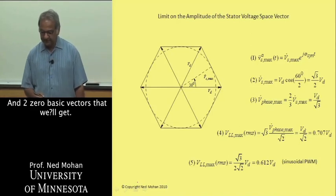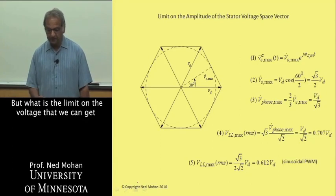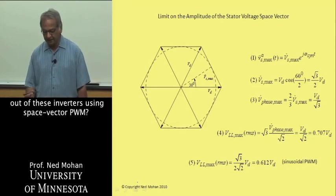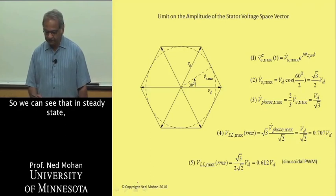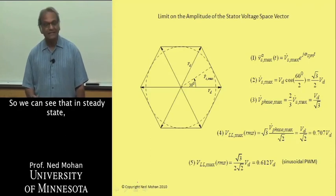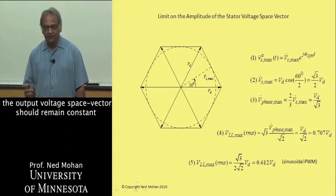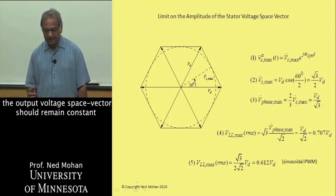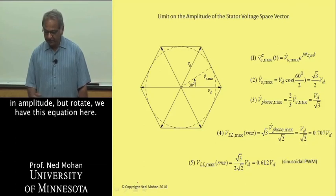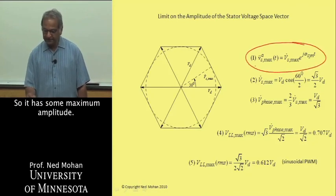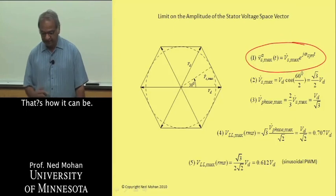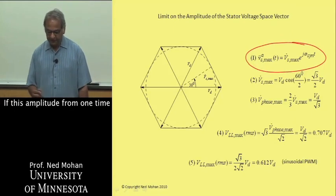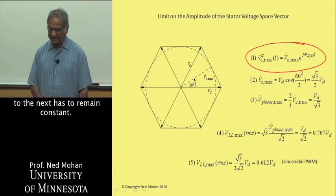Once again we have these six active basic vectors and two zero basic vectors. But what is the limit on the voltage that we can get out of these inverters using space vector PWM? You can see that since in steady state the output voltage space vector should remain constant in amplitude but rotate, we have this equation here.